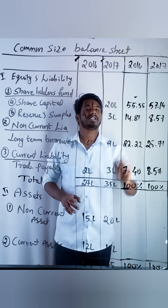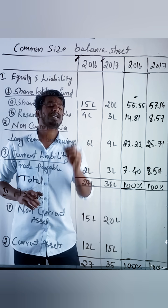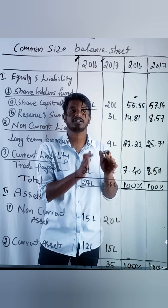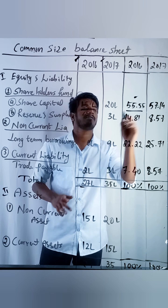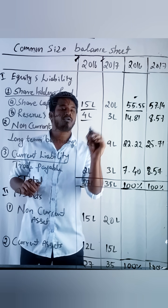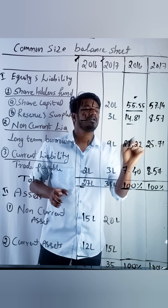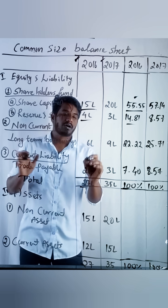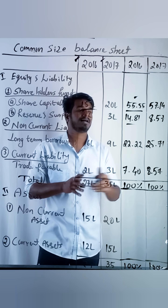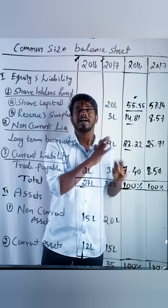Now we should find out each item's percentage. 15 lakh divided by 27 lakh into 100 will be 55.55 percent. 4 lakh divided by 27 lakh into 100 is 14.81. Now 6 lakh divided by 27 lakh into 100 is 22.22.